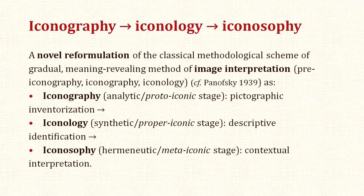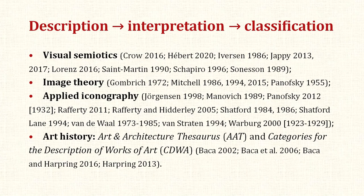The article's organizational structure is guided by the following methodological scheme: Iconography — the analytic or proto-iconic stage, involving pictographic inventorization. Iconology — the synthetic or proper iconic stage, involving descriptive identification. And Iconosophy — the hermeneutic or meta-iconic stage, involving contextual interpretation. The associated interpretive and descriptive tasks are informed by influential works in visual semiotics, image theory, and applied iconography. The description and classification procedures are also informed by authoritative art history guidelines, such as the Art and Architecture Thesaurus and Categories for the Description of Works of Art developed at the Getty Research Institute.